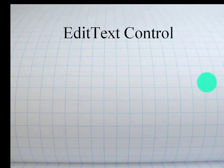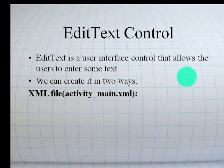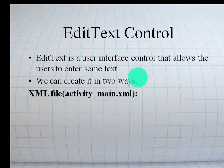Moving to the next control — EditText. EditText is one of the UI controls used to take input from the user. Suppose I want to take input like 'Enter the name' — we will provide a space for the user to enter their name. In that case, we use an EditText. If you want to take any input — username, password, address, email ID — anything that you want to take as input from the user can be done using the EditText control.